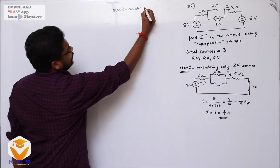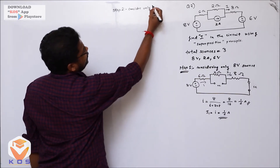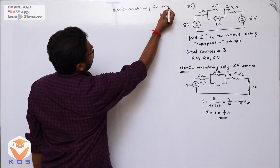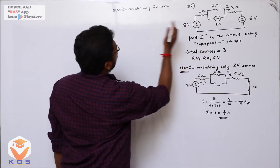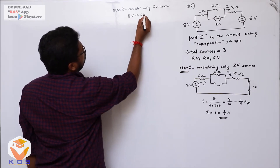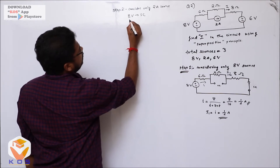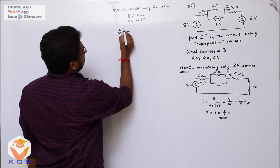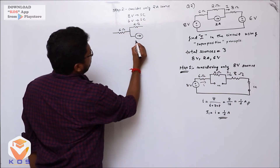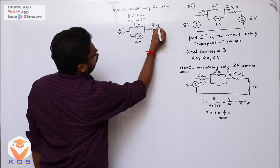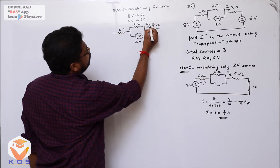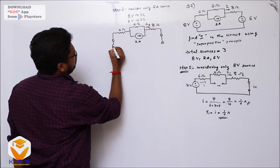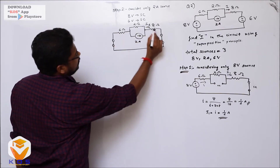Step 2: Consider only the 2 ampere current source. The 8V source is short-circuited and the 6V source is short-circuited. The circuit now has a 6 ohm, 2 ohm, and 8 ohm resistor with the 2A source. The 6 ohm and 8 ohm resistors are in series, giving 14 ohms.